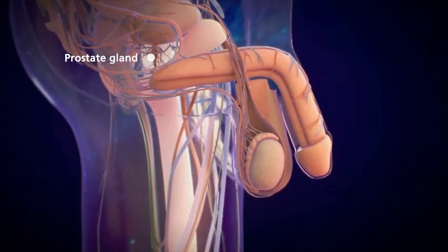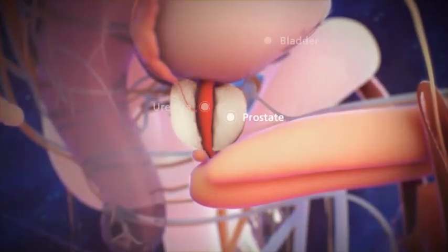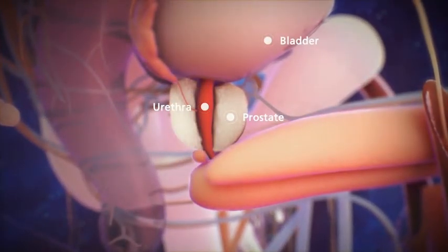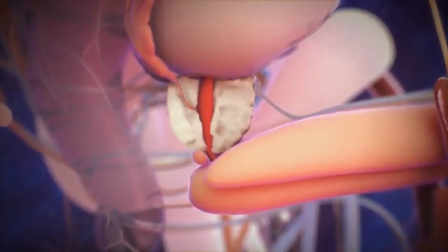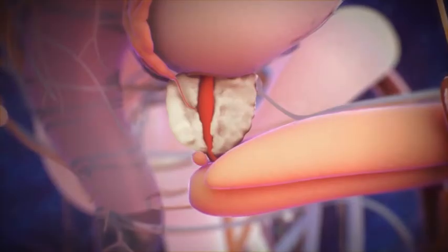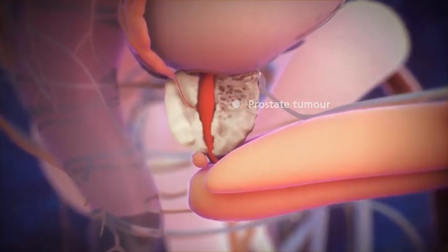The prostate gland lies just under the bladder and surrounds the urethra. The prostate produces the fluid in semen that nourishes sperm. Normally the size of a walnut, the prostate gland enlarges with aging and may also increase in size due to prostate cancer. This puts pressure on the urethra and may result in difficulty urinating.